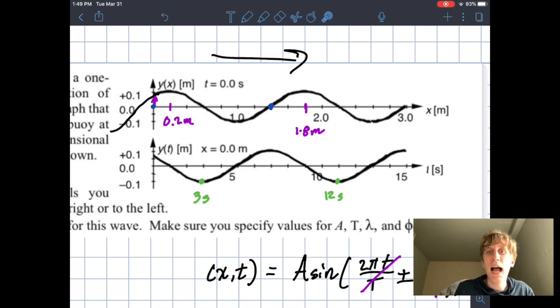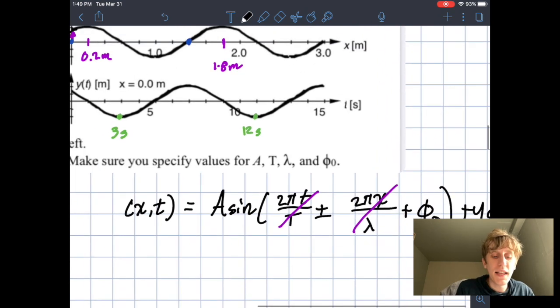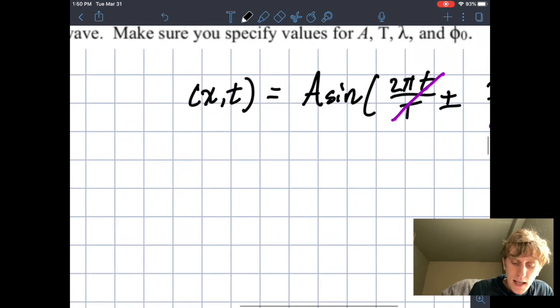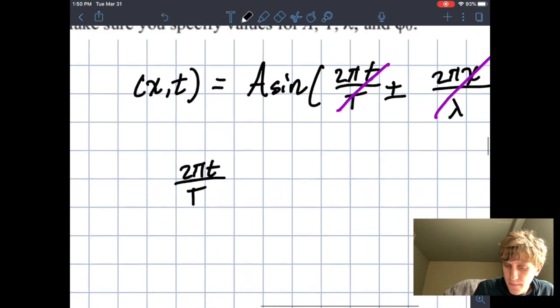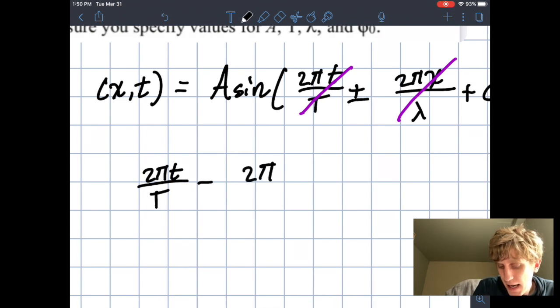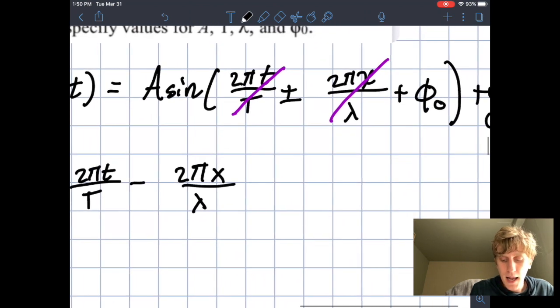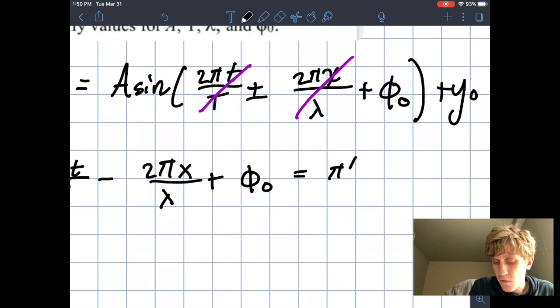It turns out that the sine function will be at its maximum whenever the argument inside is equal to pi over 2. So we need the inside of our sine function to equal pi over 2 with this value of position and time. So let's write that out. This means that 2 pi t divided by the period minus, because this wave is moving to the right, 2 pi x divided by the wavelength plus the phase constant must equal pi over 2.